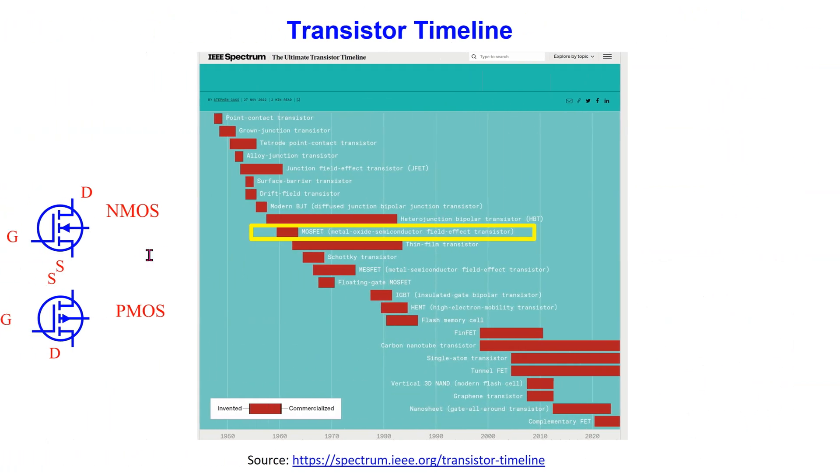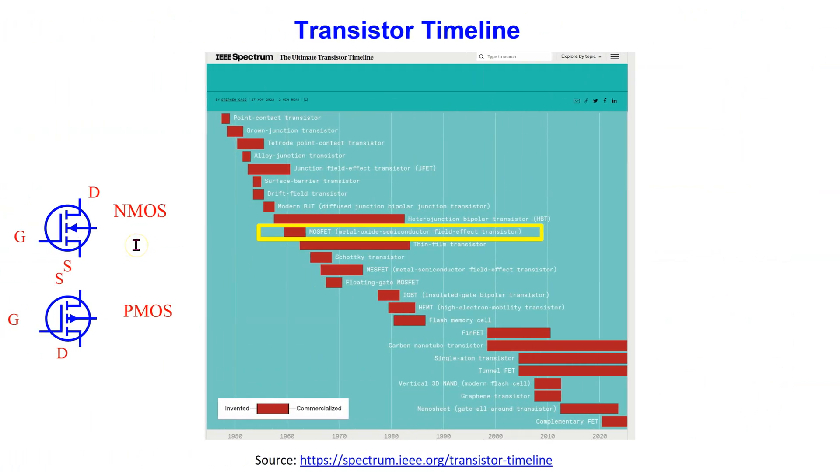The Metal Oxide Semiconductor Field Effect Transistor or MOSFET was invented and commercialized in the 1960s. It is a four terminal device. The MOSFET terminals are labeled drain, gate, source, and substrate.